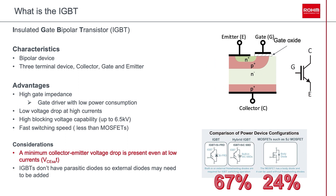An IGBT is an insulated gate bipolar transistor. The key characteristics of IGBTs are that they are a bipolar device, meaning they can amplify current and switch DC signals, and they are a three-terminal device. IGBTs have a collector, gate, and emitter. Some advantages include high gate impedance — meaning the gate driver has very low power consumption — low voltage drop at high currents, high blocking voltage capabilities up to 6.5 kV, and fast switching, although less than a MOSFET.